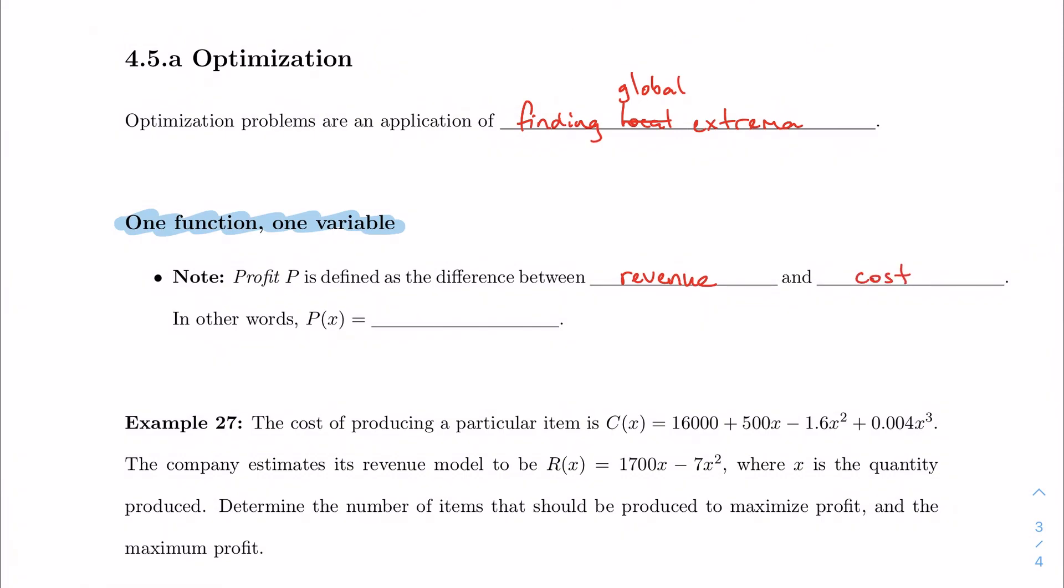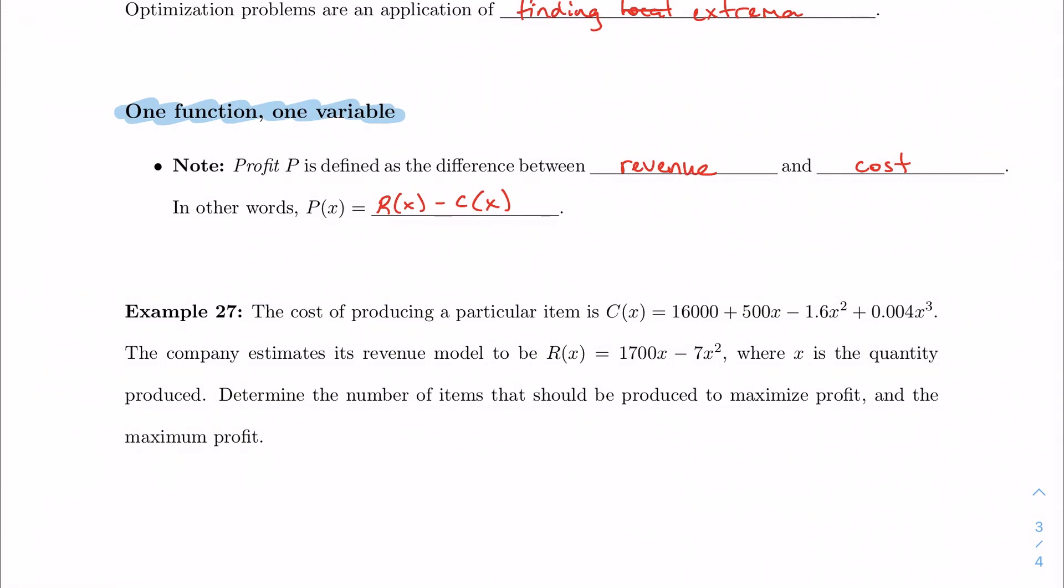Profit is the difference between revenue and cost or expense. So the total amount that you make from sales, which is revenue, and the total that it's going to cost you to produce your object. In other words, we can express this mathematically as revenue R minus cost C. So the cost of producing a particular item in this example is given by this equation, and the revenue model for the item is given by this equation, and in this case x is the quantity produced. You want to determine the number of items that should be produced in order to maximize profit and also find the maximum profit.